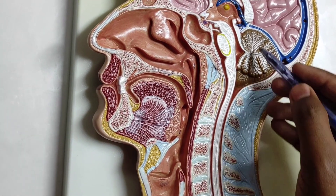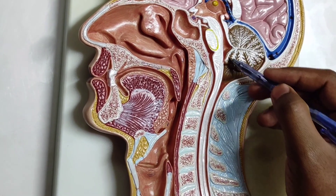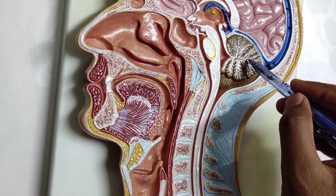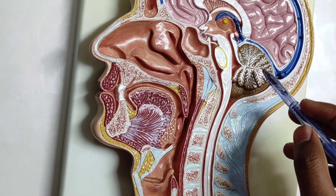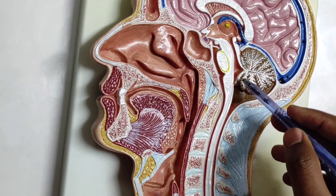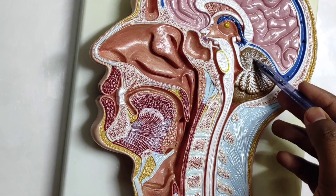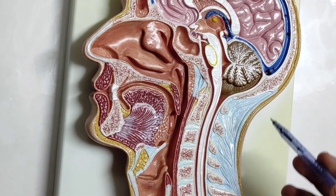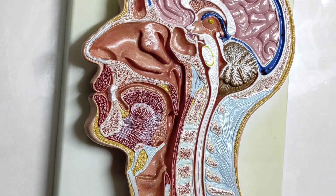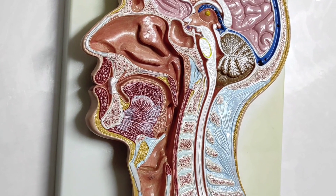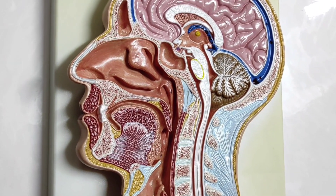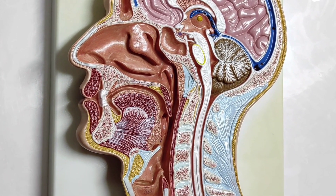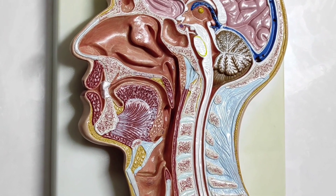This area is our cerebellum. As its shape shows, it is tree-like; we also know it as the 'little brain.' The cerebellum is a major controlling center in our body, and its tree-like white matter appearance is known as the arbor vitae.